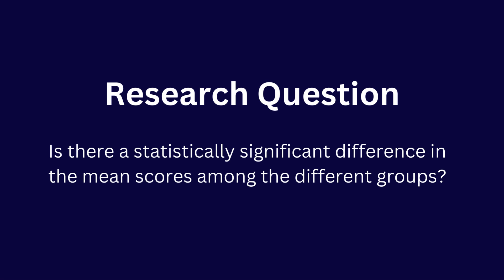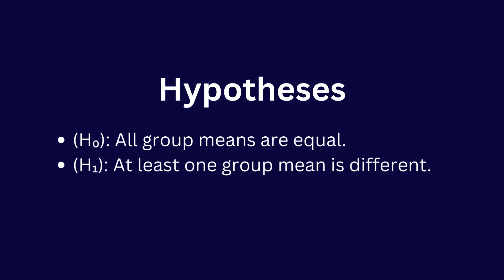Let's build our hypothesis according to this research question. The null hypothesis is: all group means are equal. The alternative hypothesis is: at least one group mean is different.